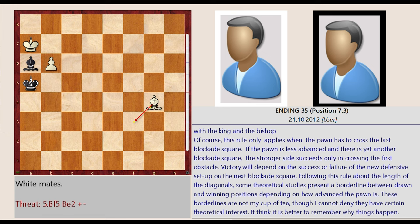If the pawn is less advanced and there is yet another blockade square, the stronger side succeeds only in crossing the first obstacle. Victory will depend on the success or failure of the new defensive setup on the next blockade square.